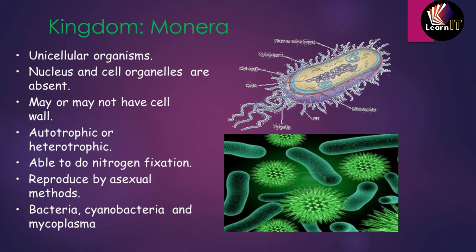The third point is that Monera organisms may or may not have a cell wall. These organisms can be autotrophic or heterotrophic in nature. Let me give you a quick glimpse of what autotrophic and heterotrophic mean.